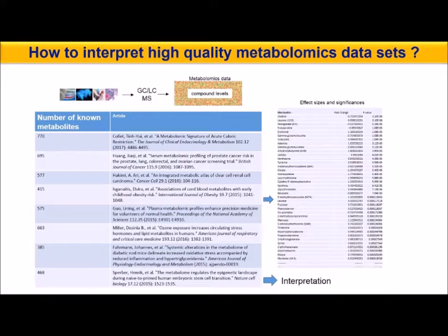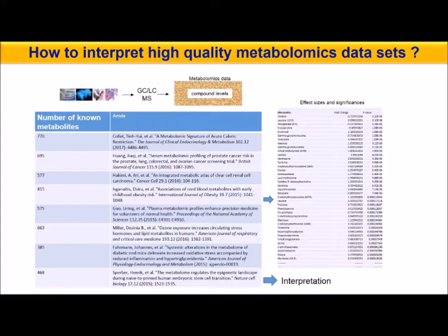In addition to high-quality metabolomics datasets, several papers also have tables with metabolites, effect sizes, and significance values coming out of a statistical analysis. These two types of information — high-quality metabolomics datasets and statistical analysis — are available in the supplementary sections of several papers, indicating that data quality is improving and statistical analysis is straightforward to conduct. However, the challenge remains: how do we interpret these high-quality metabolomics datasets?